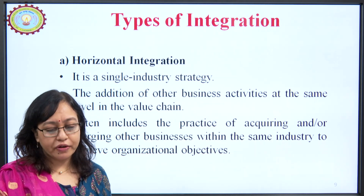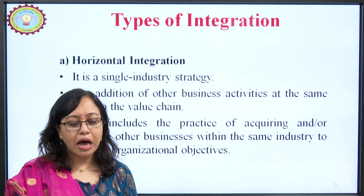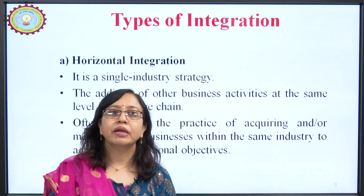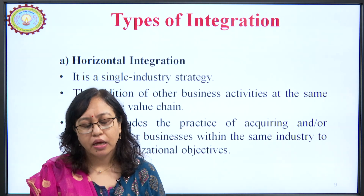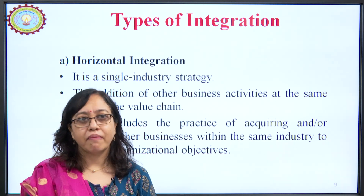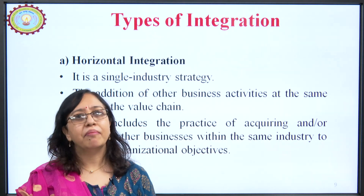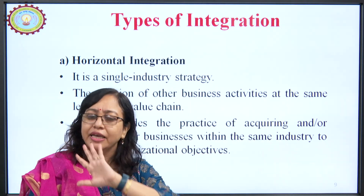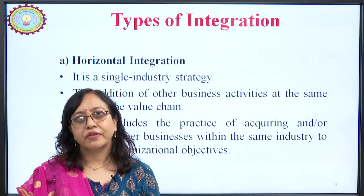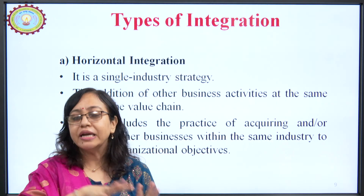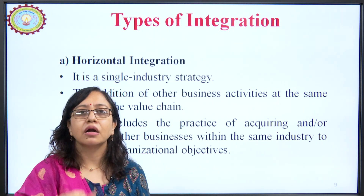A very significant example of horizontal integration occurred in April 2017 in the banking industry, when several banks were merged into the State Bank of India — the State Bank of Bikaner and Jaipur, State Bank of Travancore, State Bank of Mysore, State Bank of Hyderabad, State Bank of Patiala, and Mahila Bank. These six banks were at the same horizontal level as SBI, doing the same activities, only with different names and management setups. They were integrated with SBI — business was not different, all at the same level. This is horizontal integration.